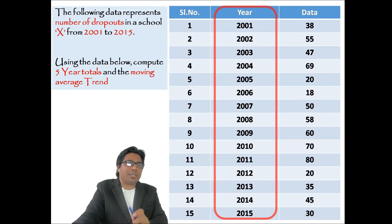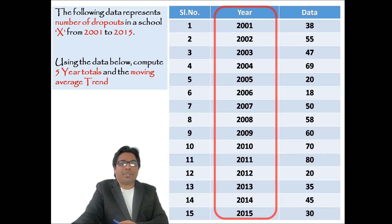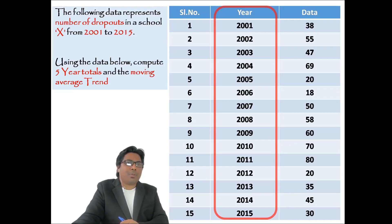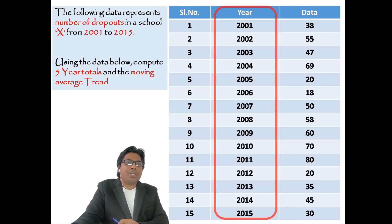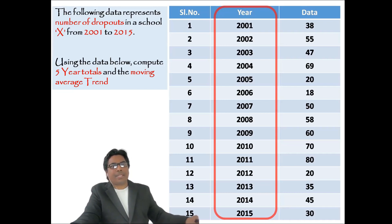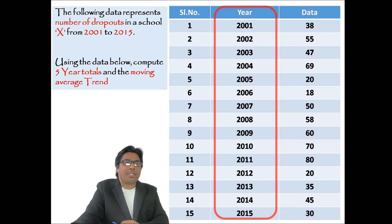We have two columns: year and data. Under year, we have 15 years starting from 2001 to 2015, and the data shows how many students dropped out in each year. For example, in 2001 it is 38, and in 2002 it is 55, and so on for all 15 years.